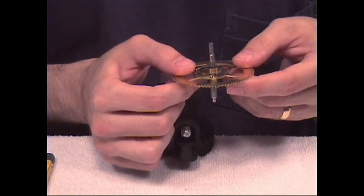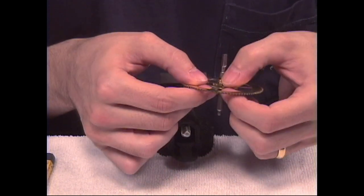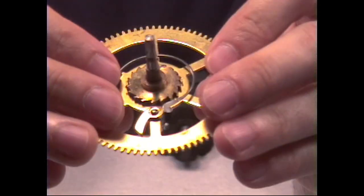On this next adjustment we're going to tighten the click rivet so the click will be more tight. Now let me give you a close-up of what we're going to be doing here.